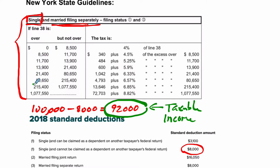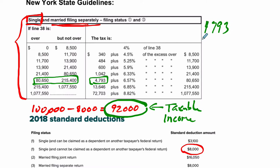Looking at this chart, $92,000 fits in this range right here. After the standard deduction, it falls between $80,000 and $215,000. This tells us the tax we're paying. The tax would be $4,793, plus 6.57% of the excess over $80,650.